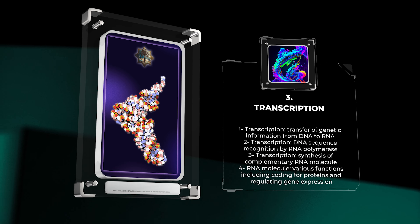Once transcribed, RNA molecules undergo processing events that modify and refine their structure, ensuring their functional competence. These processing steps include capping, splicing, and polyadenylation, which collectively contribute to regulating RNA stability, transport, and translation efficiency.